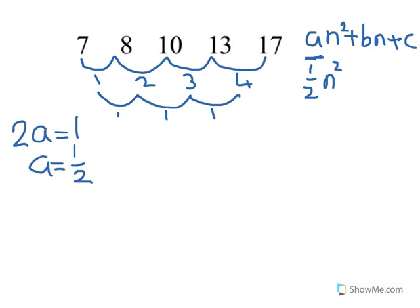To find C, we have to do something a little bit odd. If we look at the sequence, 7 is the first term, 8 is the second, 10 is the third, 13 is the fourth, 17 is the fifth. I want to find the term that came before the first — the zeroth term.